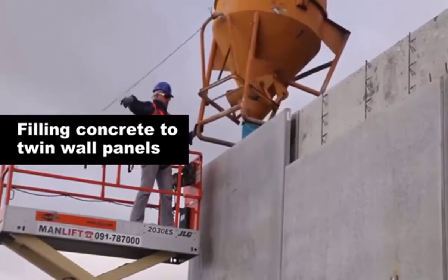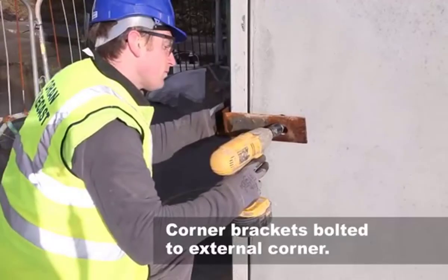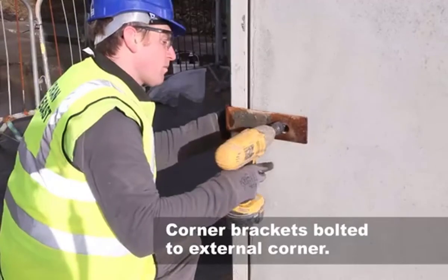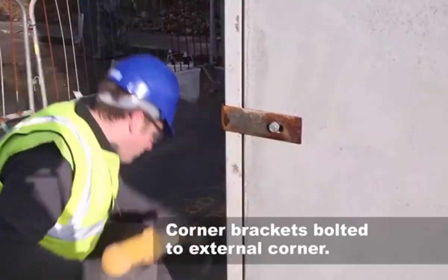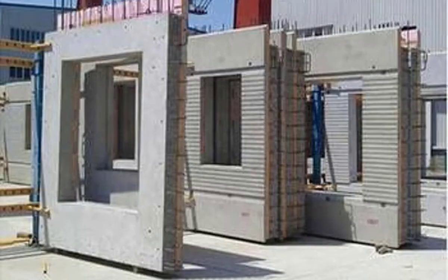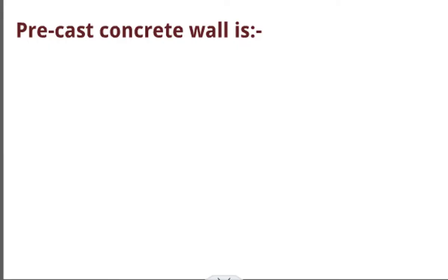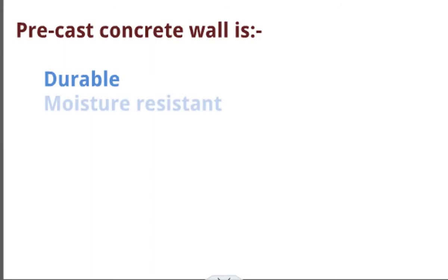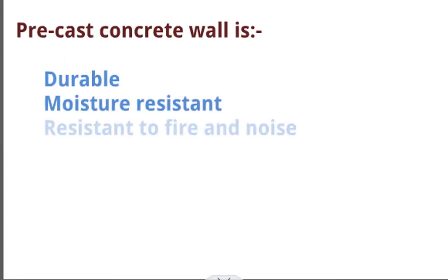A space is provided for the connection between the precast wall and the ground. You make formwork around this space and fill light concrete into the wall from the top. For the edges, you hold them in position with a corner bracket. This wall can also be precast in such a way that window openings or door openings are already provided in them. A precast concrete wall is usually durable, moisture resistant, and has high insulation against fire and sound.